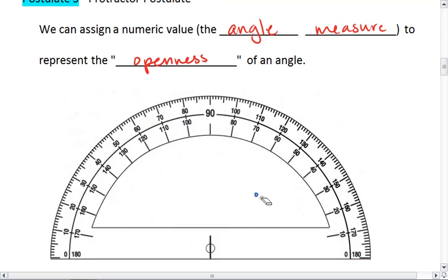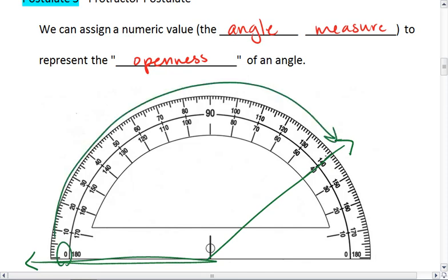With protractors, you can actually set the side to be on the right or the left. So now let's start from the left, and let's say this one opens up right here. This angle, we start at the 0, so now we're using the numbers on the top. And I realize that this angle is 140 degrees.